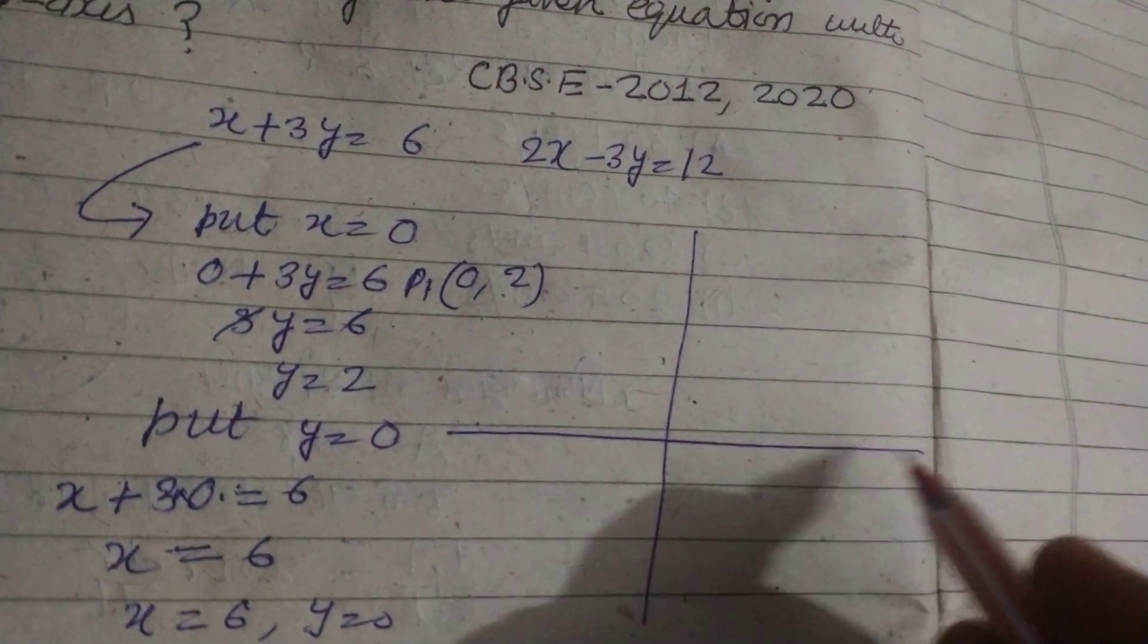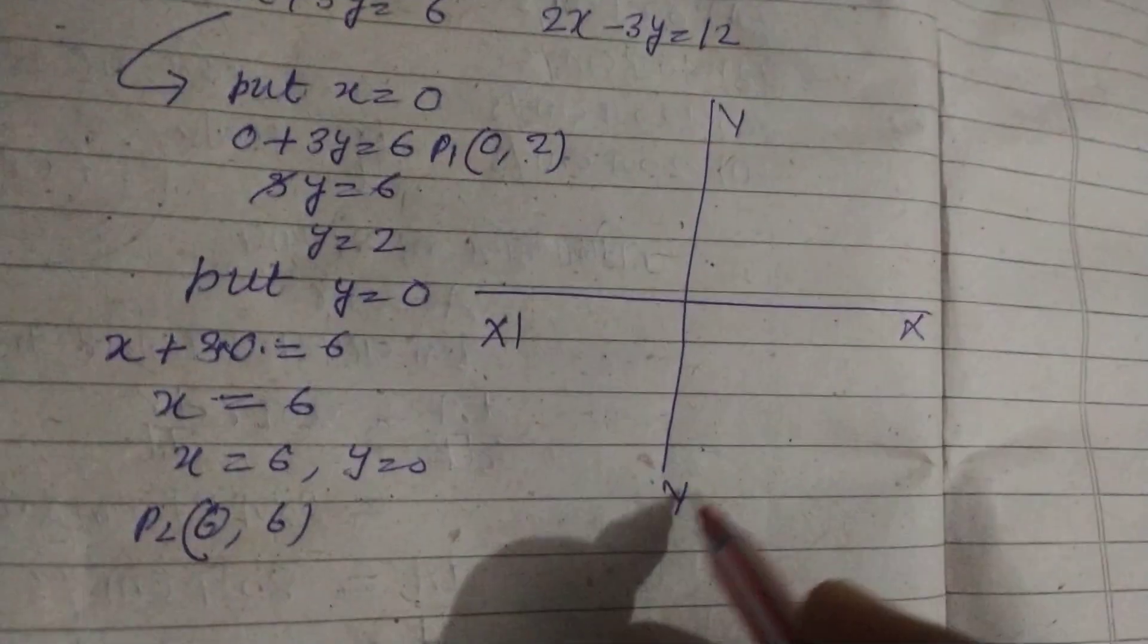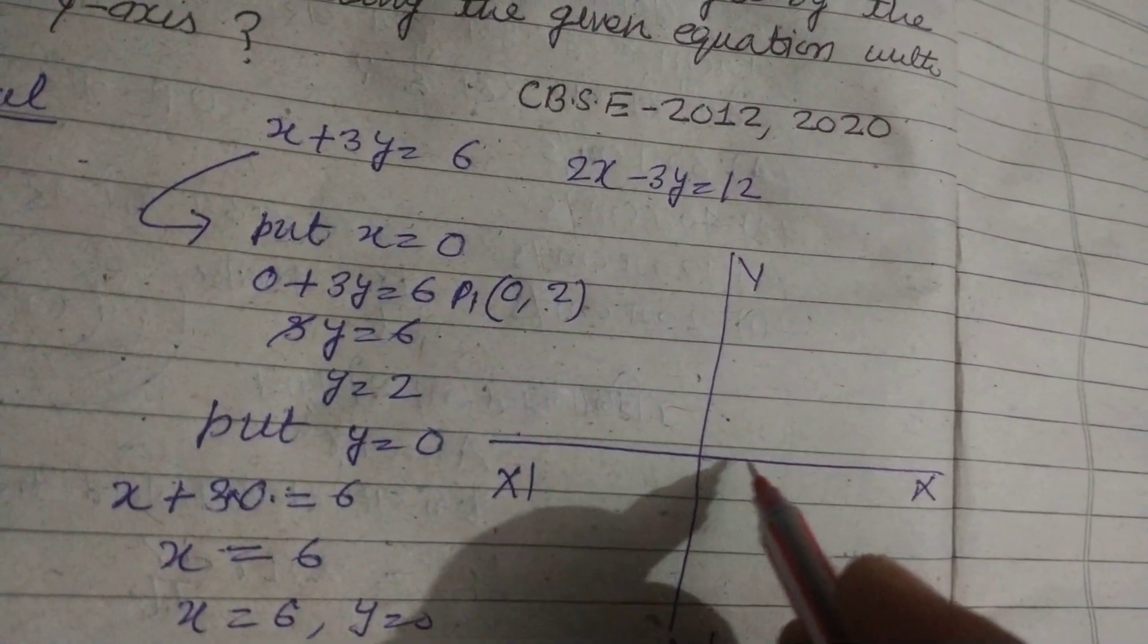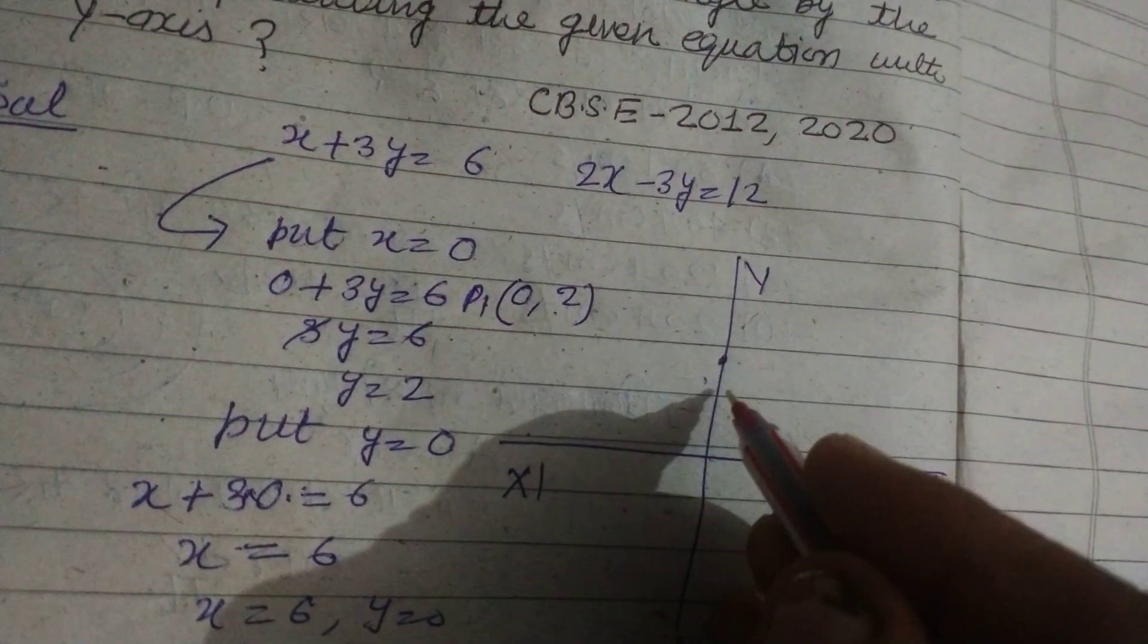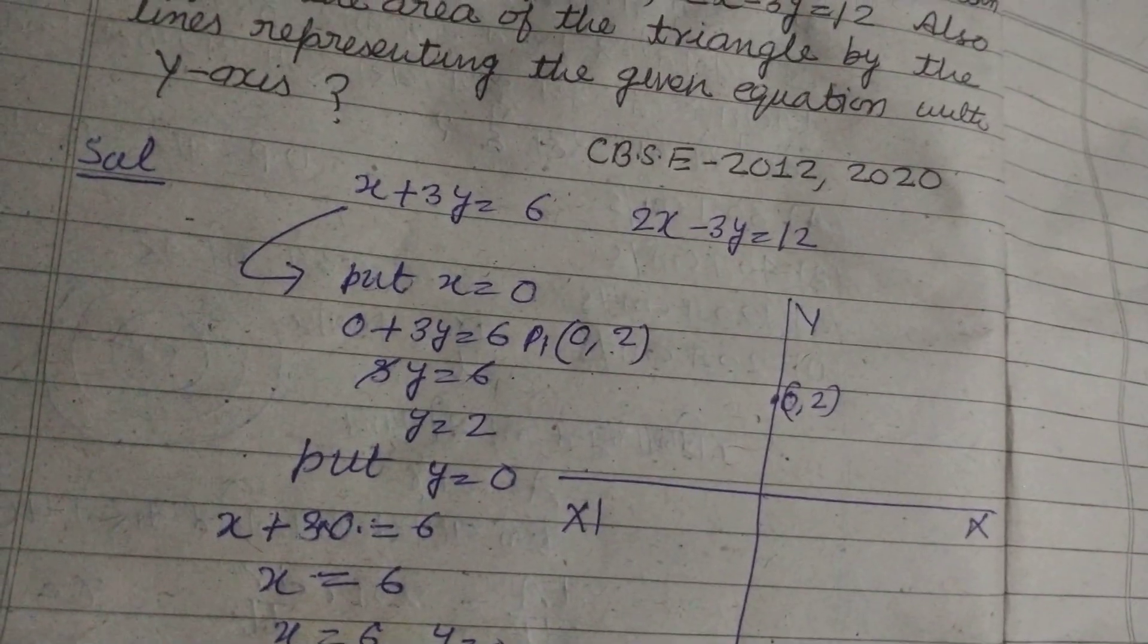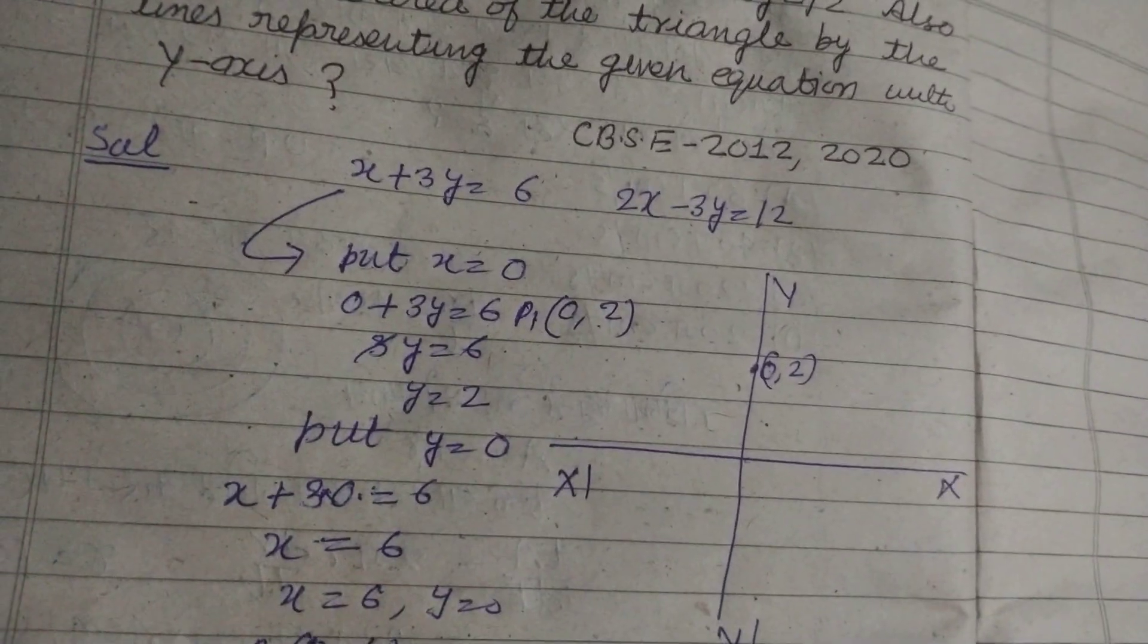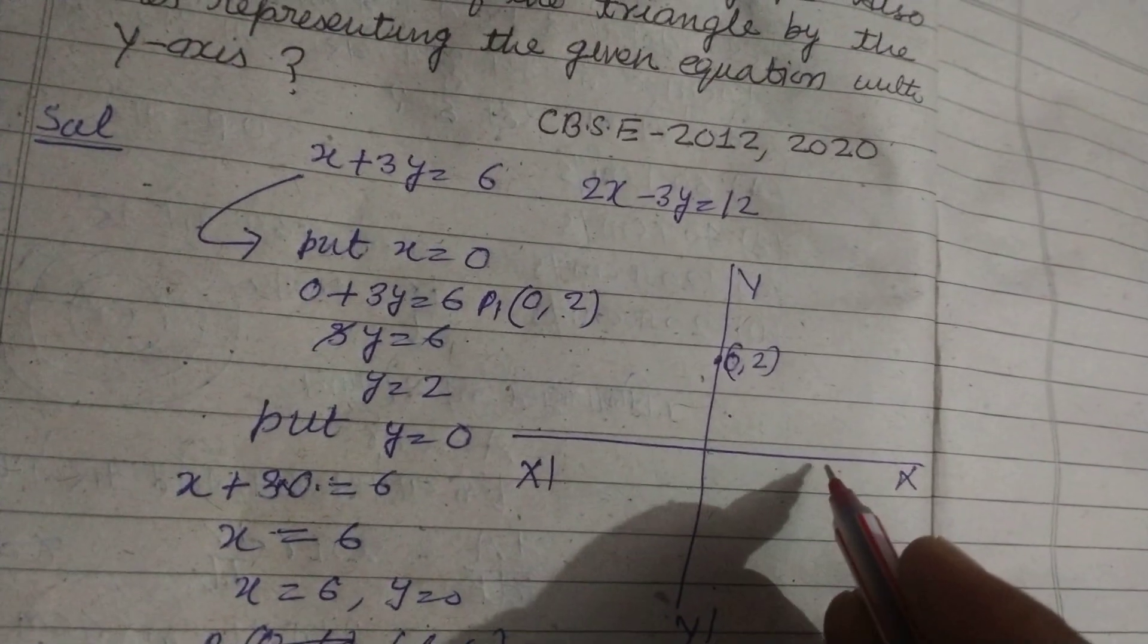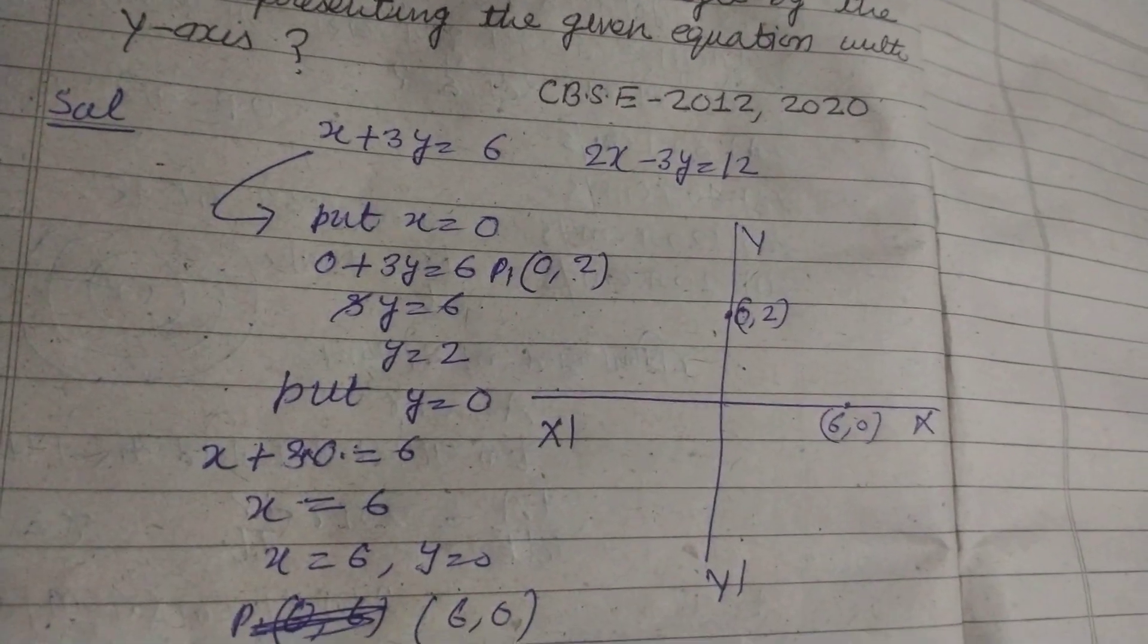On the graph paper this is x, x dash, y, y dash. So 0 comma 2 is the point here, and this is 6 comma 0.